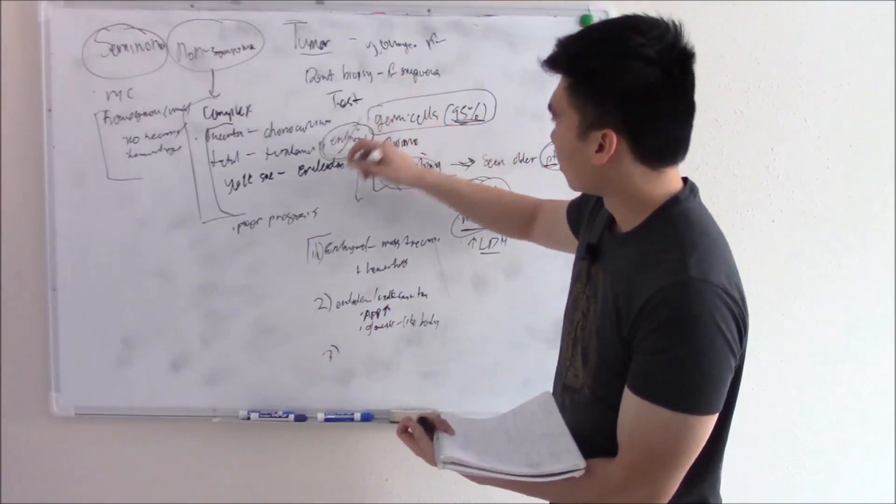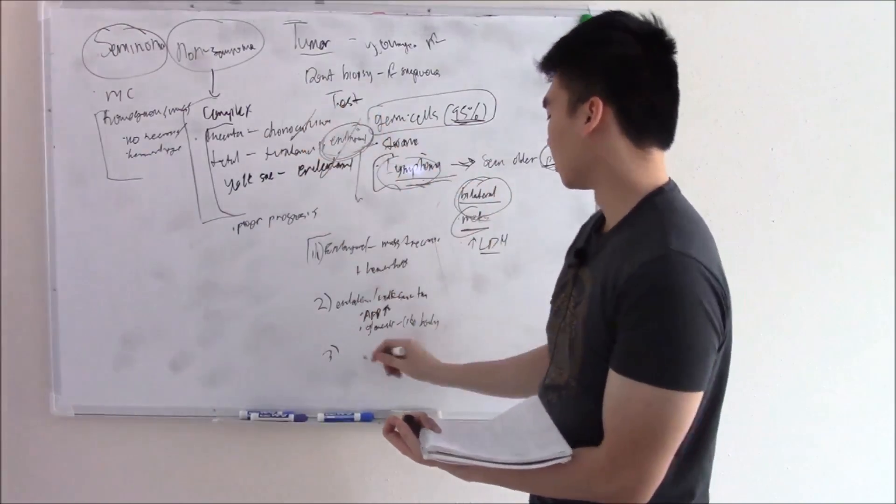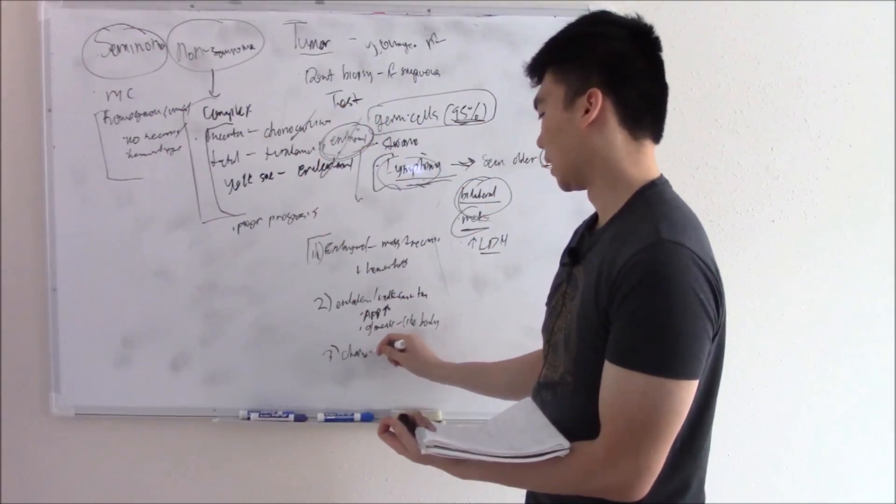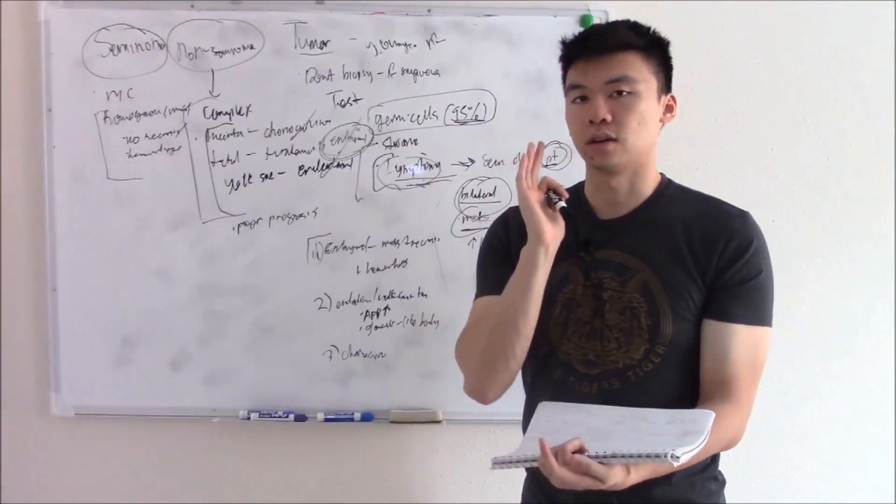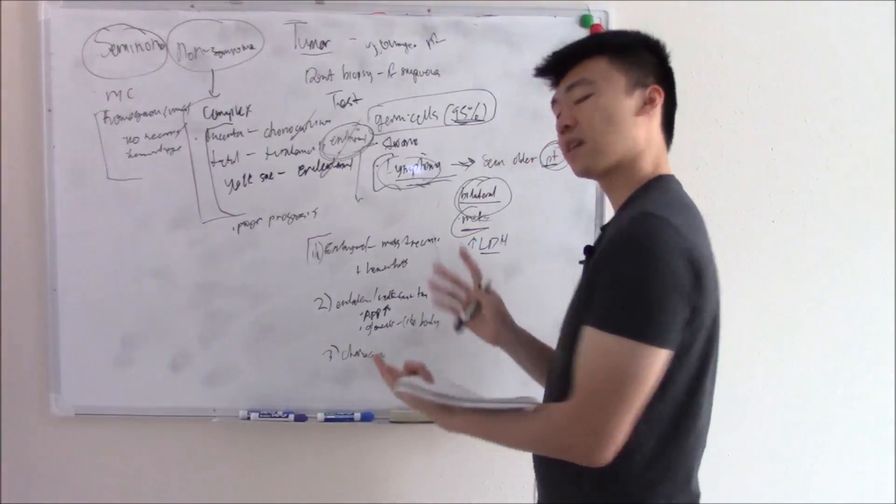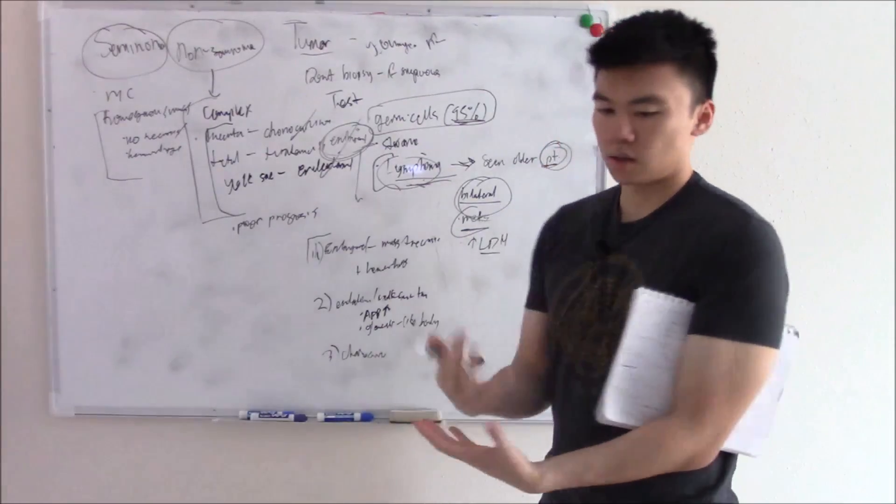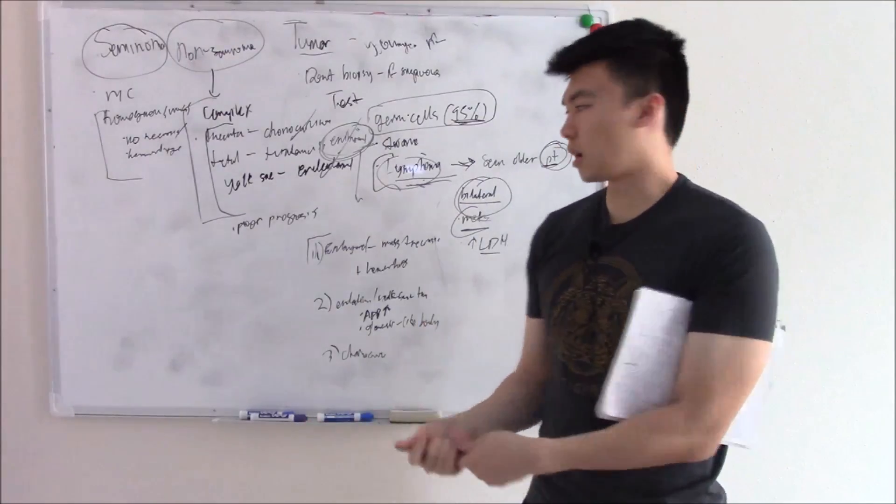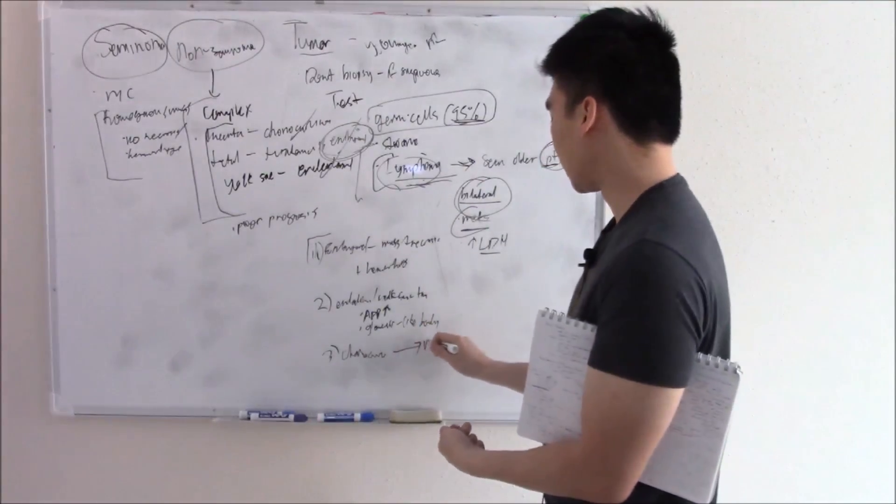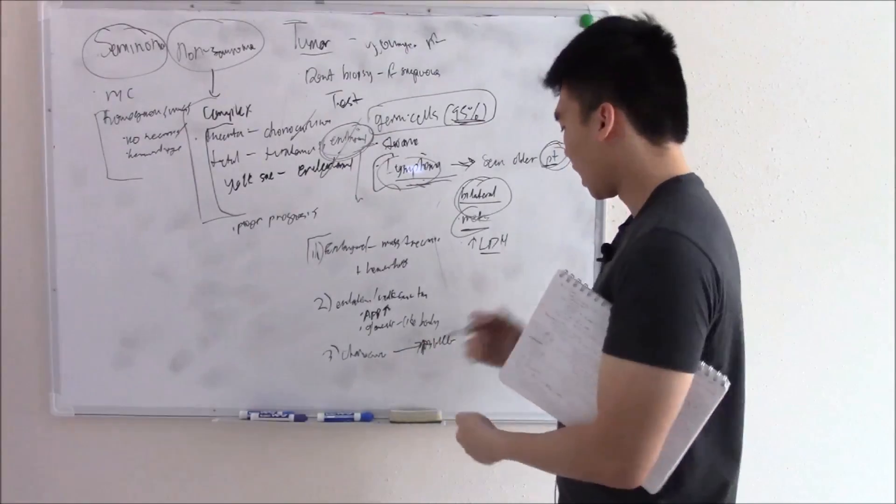So we talked about embryonal. We talked about endodermal. Let's move on to choriocarcinoma. Again, we talked about choriocarcinoma during ovarian tumors. Can you recall the characteristics of choriocarcinoma? How about the pathogenesis at least? Choriocarcinoma is proliferation of your trophoblastic tissue. So there's syncytiotrophoblast, cytotrophoblast. Syncytiotrophoblast release beta-hCG. So that's going to be elevated.